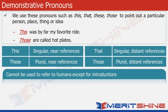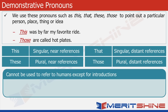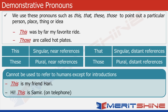In general, demonstrative pronouns cannot be used to refer to humans, except in introductions. For example: This is my friend Hari, or when introducing myself on the telephone, I can say, hi, this is Samir.